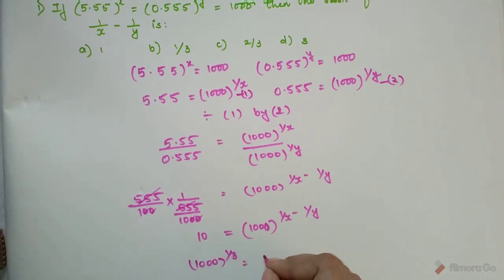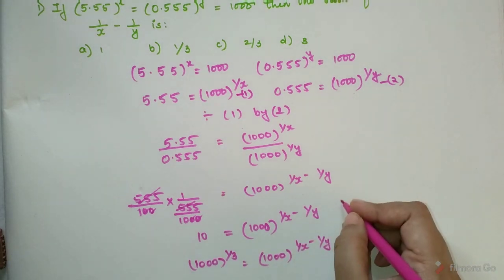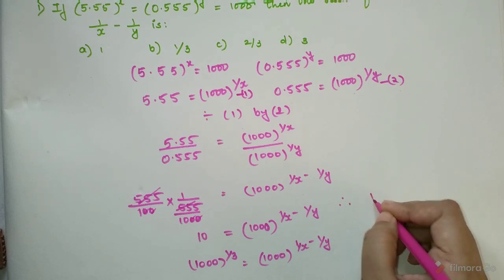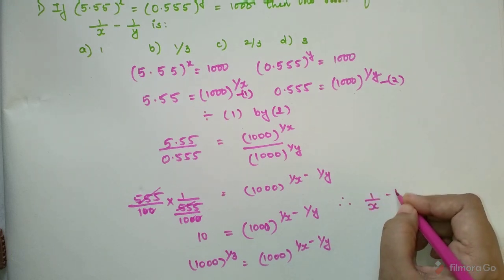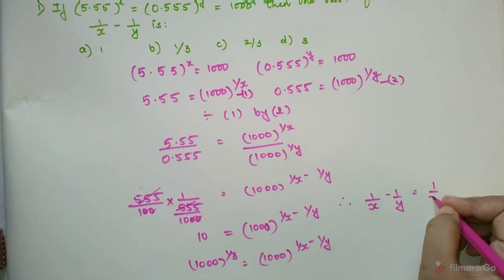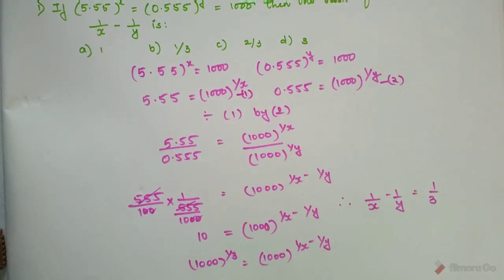So I can write 10 right over here, this says 1/x - 1/y. So now very conveniently I can say therefore 1/x - 1/y = 1/3. So I hope this sum is now very clear to everyone.